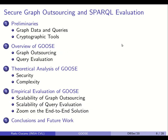I'll give details about the class of graph data and queries supported in our system, the cryptographic tools we rely on, then describe the GOOS system — first how graph outsourcing is done by the data owner, then how query evaluation is done for each query. I'll discuss the theoretical analysis of GOOS with respect to security and complexity, then provide details about an empirical evaluation covering scalability of both steps and a zoom on time taken by each participant in an end-to-end solution.